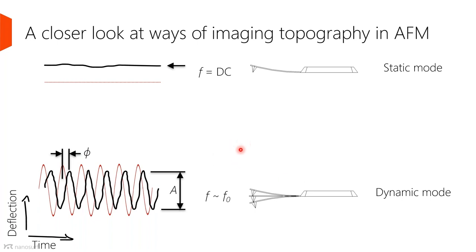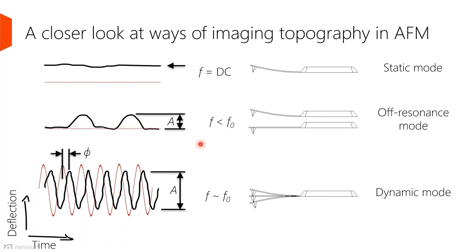Off-resonance modes operate away from resonance — at some frequency less than the resonance. The difference between dynamic and off-resonance modes is that in dynamic mode we think of the cantilever as a resonant object, whereas far enough away from resonance we can treat it as a non-resonant object. We have cases where the cantilever is not interacting with the surface and cases where it is, producing a signal that looks different from both the static constant deflection and the dynamic sinusoid.